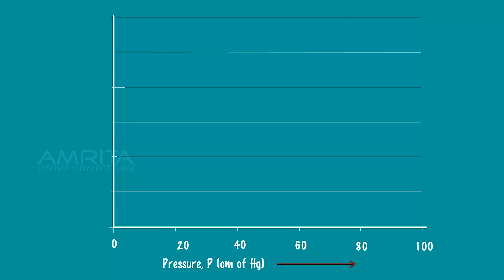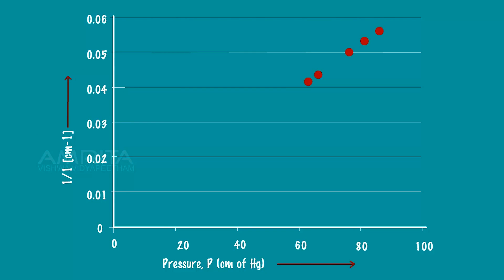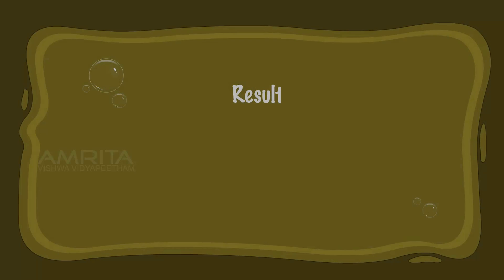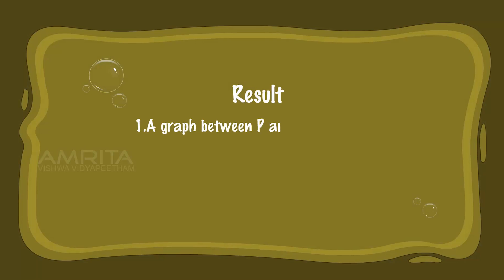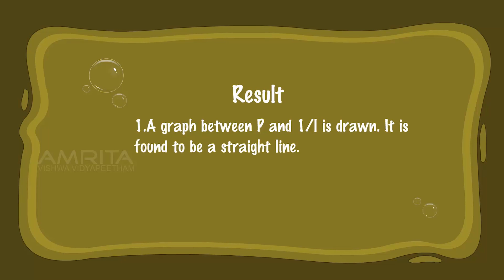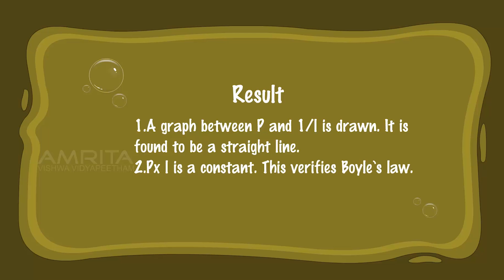Plot a graph with pressure along the x-axis and reciprocal of length (1/L) along the y-axis. The graph is a straight line. A graph between P and 1/L is drawn and found to be a straight line. Since P × L is constant, this verifies Boyle's Law.